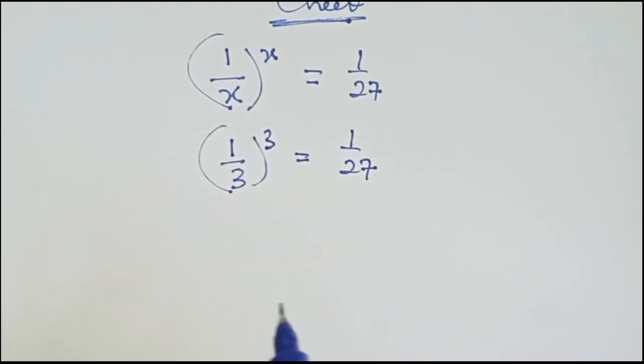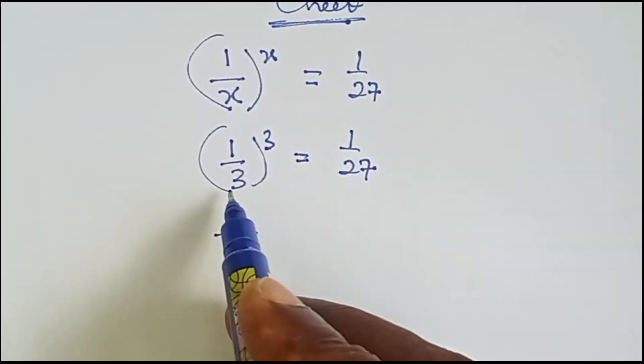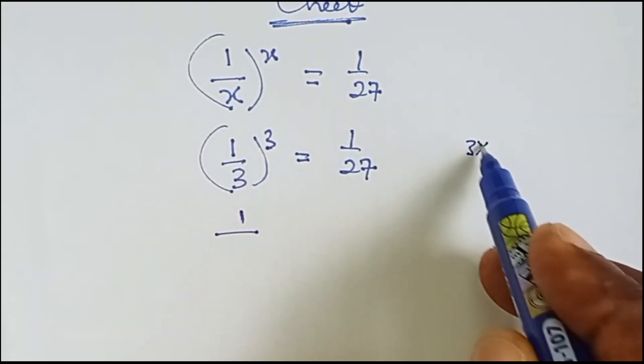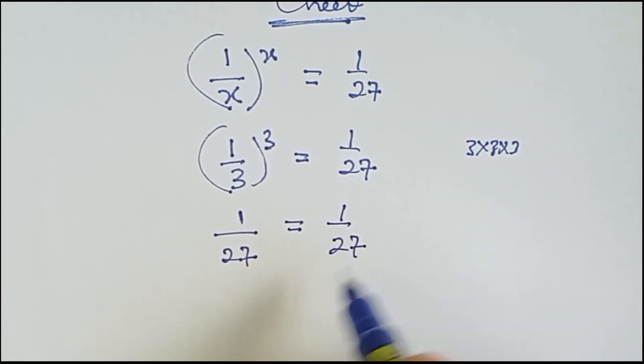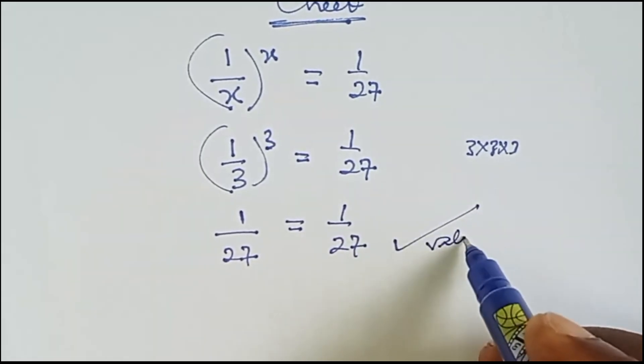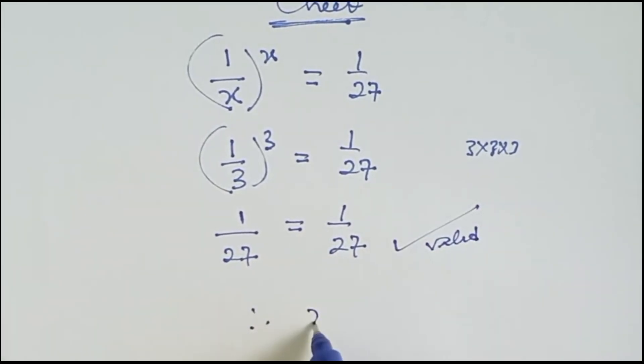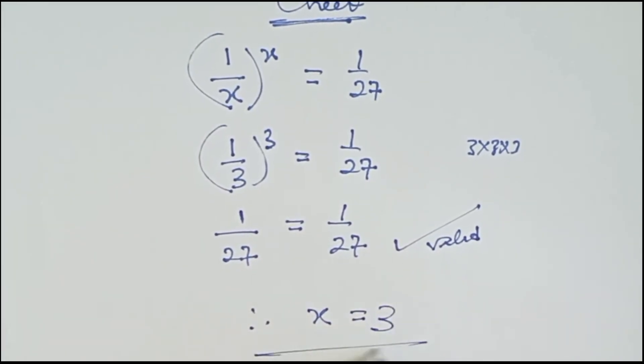What is 1 raised to the power 3? It's the same thing as 1. 3 raised to the power 3 means 3 times 3 times 3, which is 27. So 1 over 27 is equal to 1 over 27. This is valid. Therefore, x equals to 3 is our final answer.